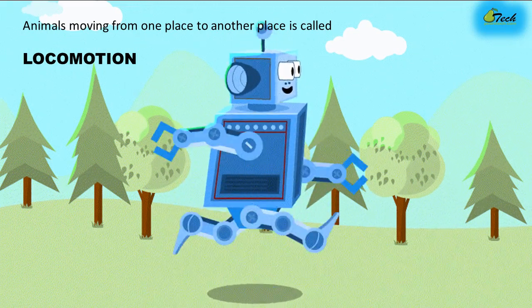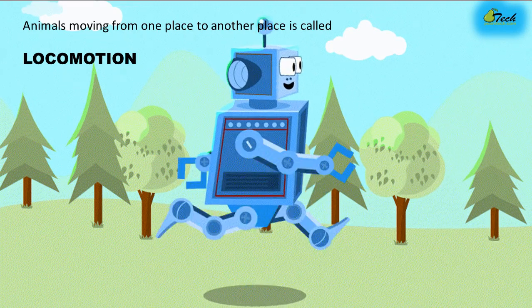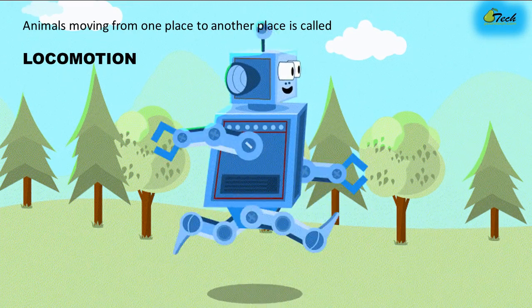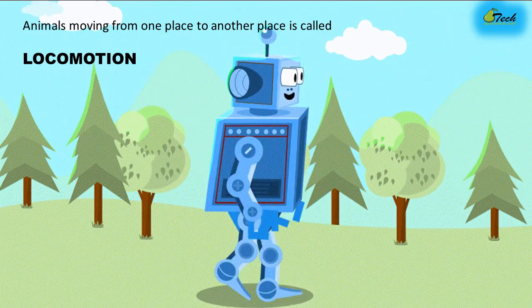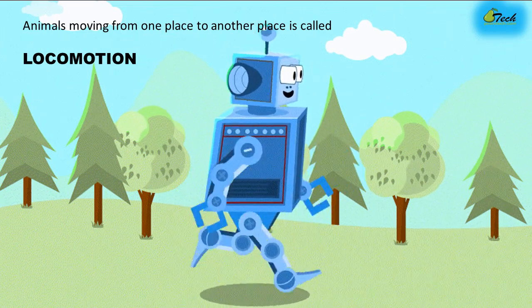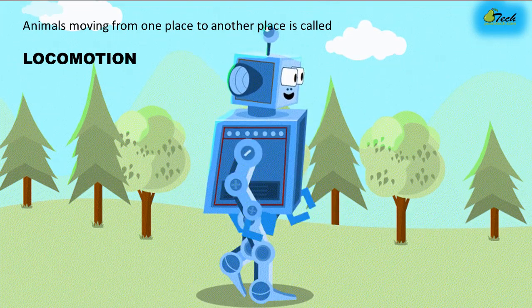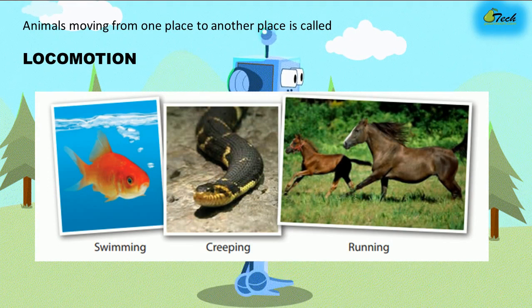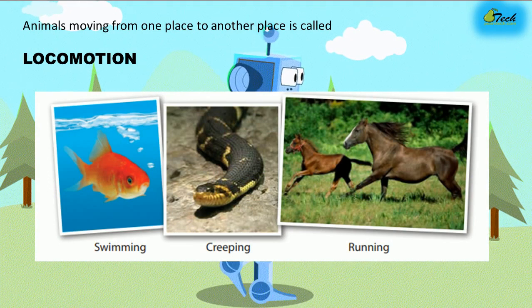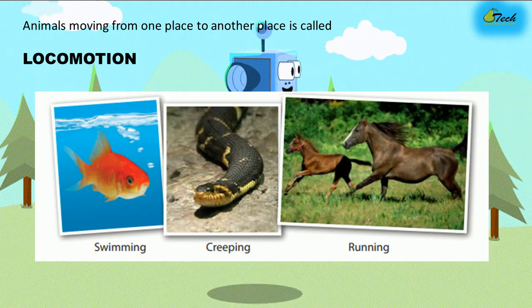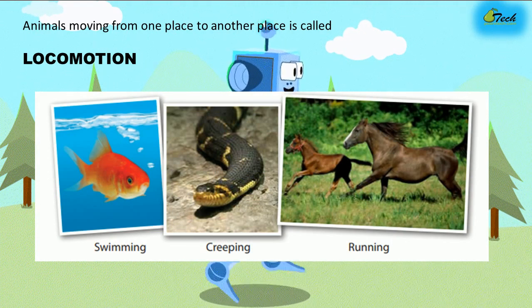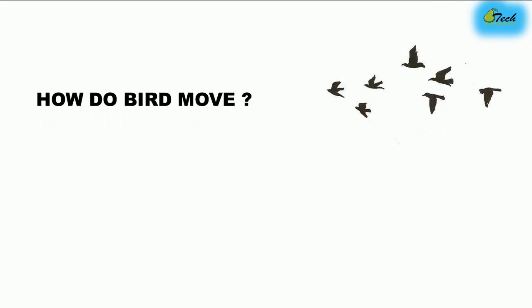Animals moving from one place to another is called locomotion, and it has different types. Fish swim from one place to another. A snake doesn't swim — it creeps. A horse doesn't creep — it runs. Each animal has its own type of locomotion.